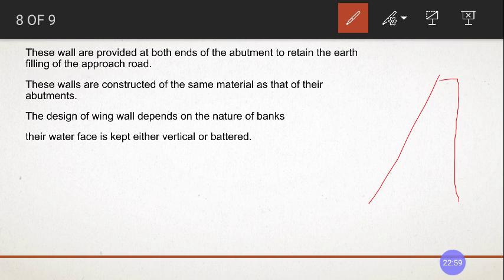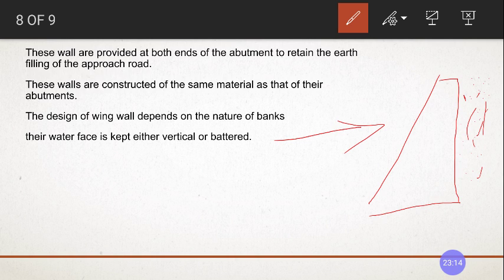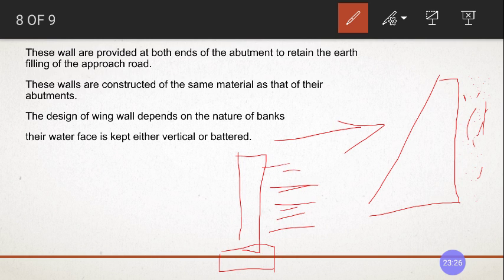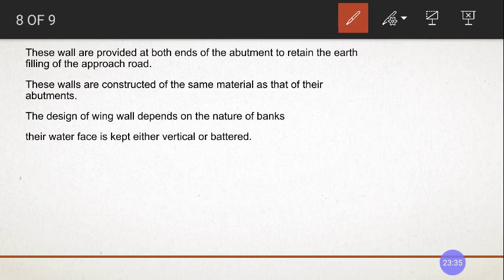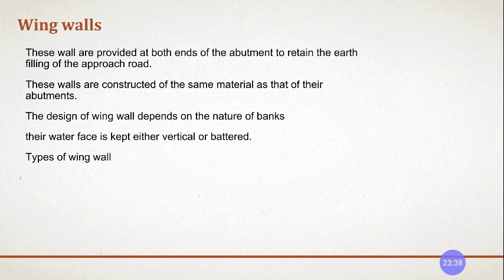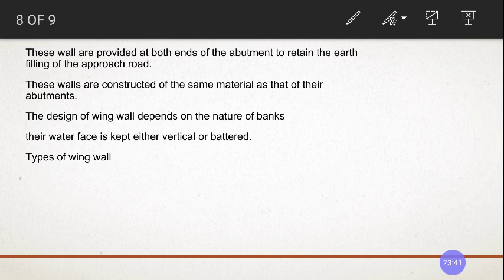In the previous image it was straight because there is no water face. If there was water, they would go for a battered wall — battered means it has a slope. When you cut it in section this is how it looks. This is the inside portion where it retains earth. This is your wing wall — how it looks if it is battered. If it is straight, it will look vertical, with a foundation retaining earth.